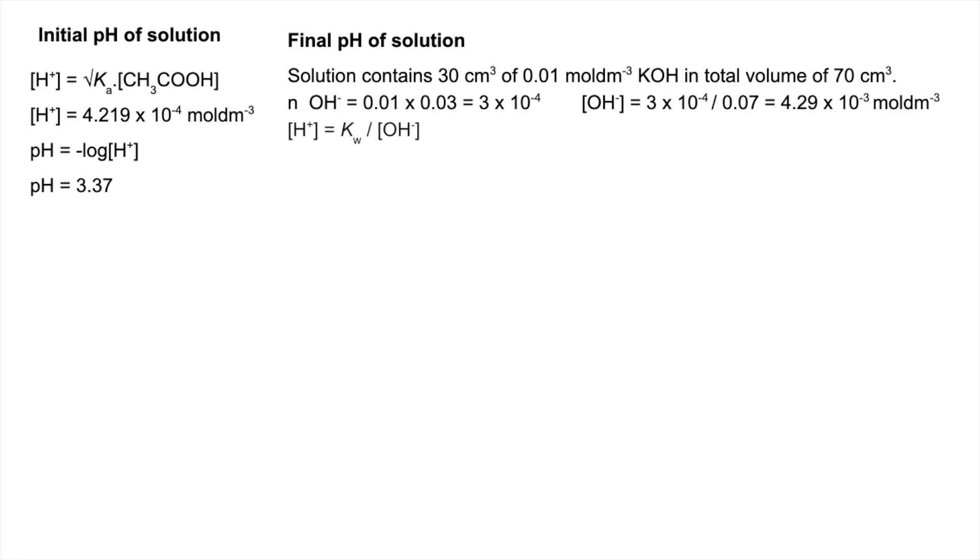Because we're calculating the pH of a strong base we need to do the H+ concentration and equal to Kw, the ionic product of water, divided by the OH- ion concentration. There's the calculation there and we get an H+ concentration of 2.33 times 10 to the minus 12 moles per decimeter cubed. Minus log that, we get a pH of 11.63.